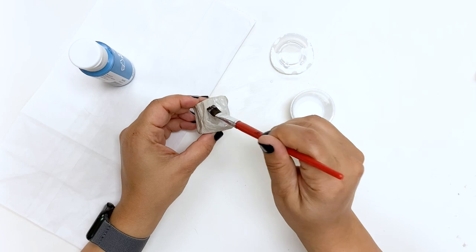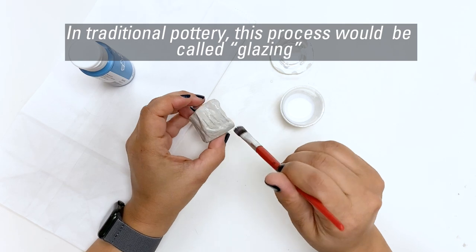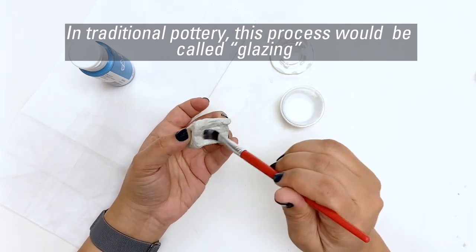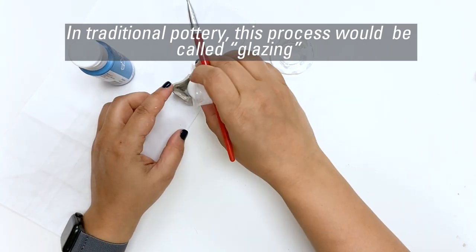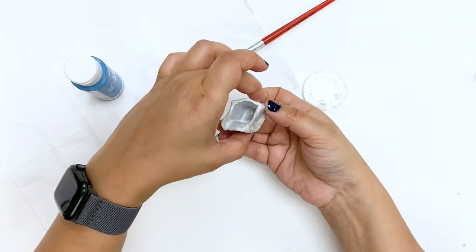A quick but important step, before you add any color, seal the porous surface of your project with equal parts water and glue mixed together. Make sure there are no bubbles, let dry, and then you'll be ready to add your color.